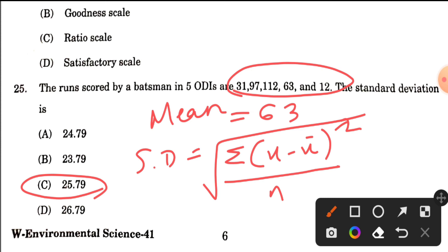Even if you use the alternate formula — summation of (x minus x-bar) squared divided by (n minus 1) — the correct answer still does not match any option. Please look into this question carefully. If you get any of the listed options through a valid method, share the full explanation with us and we will definitely accept it if it is correct.